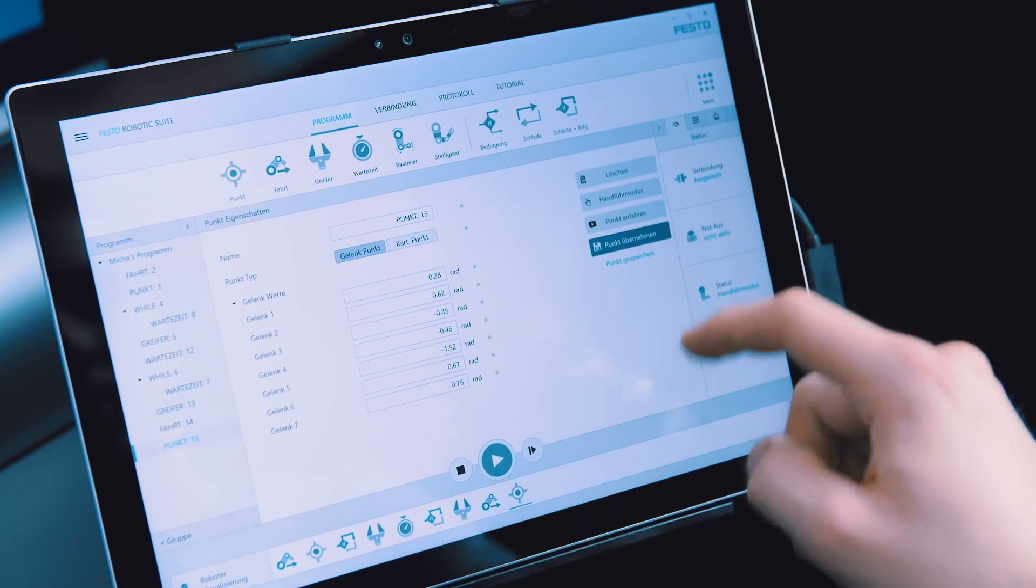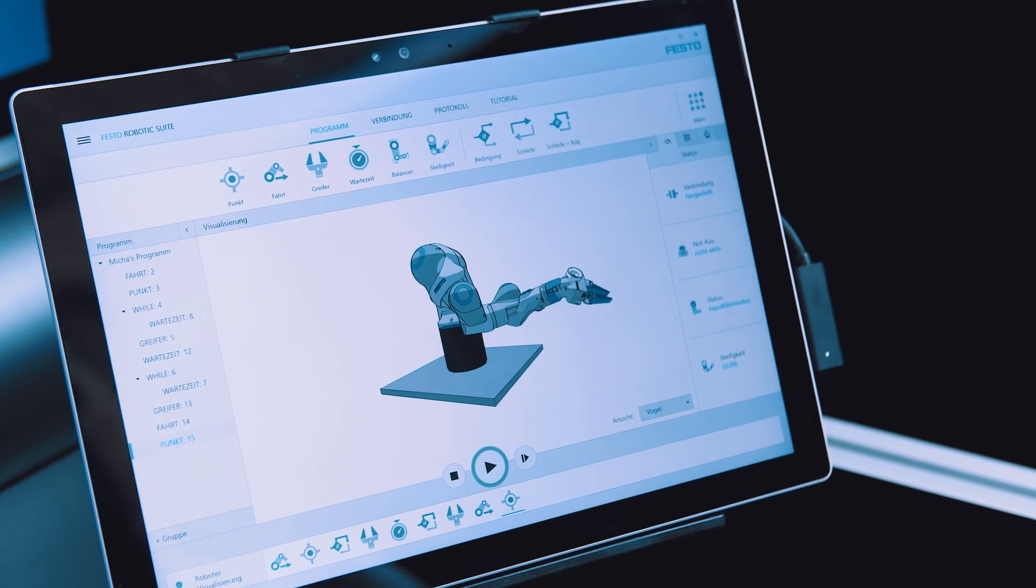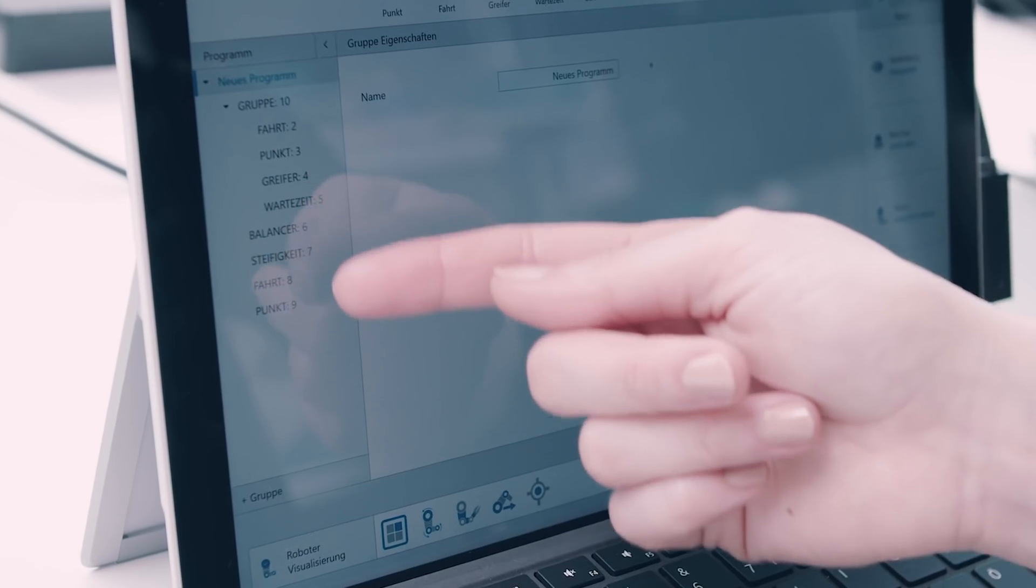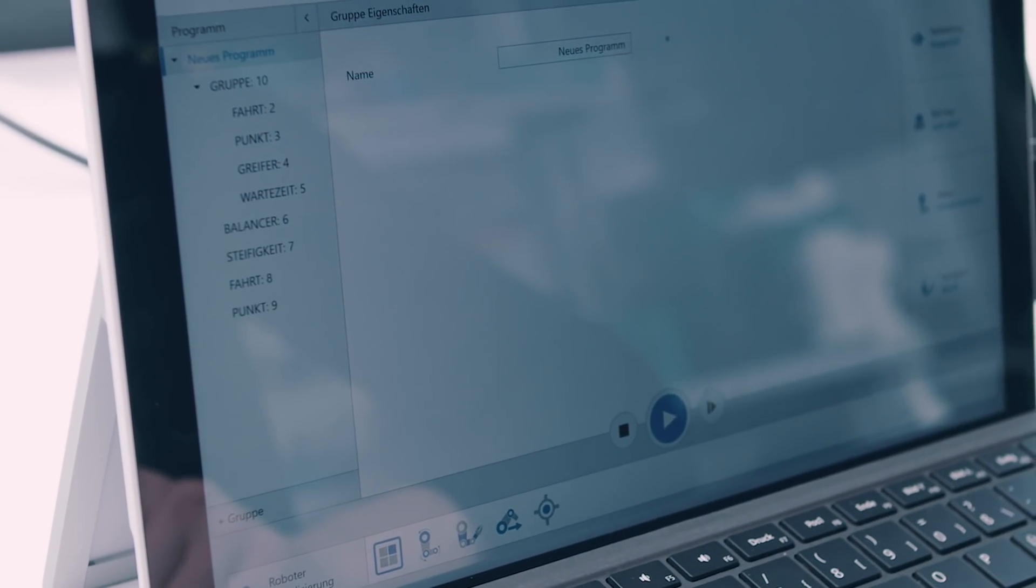If programs and program sequences get more complex, it's necessary to group these logically. The user can use groups here and allocate individual actions to these groups. Once the user is satisfied with their program, they can press the play button and let the program run through.